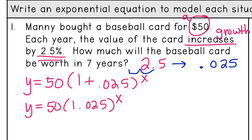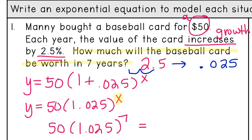The question is asking how much will the baseball card be worth in seven years, so we're going to plug in seven where the x is: fifty times 1.025 to the seventh power. We put this into our calculator — I showed you the website desmos.com — and I get 59.43. Since this is money, I'll use two decimal places: fifty-nine dollars and forty-three cents.